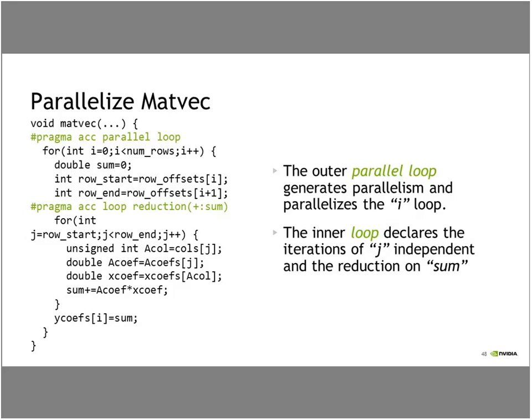The final routine to accelerate is MATVEC. This is a doubly nested loop, slightly more complicated. I'll put my ACC parallel loop on the outside loop, and on the innermost loop I'll use an ACC loop directive and expose the reduction it's doing. So the parallel loop generates parallelism and parallelizes I; the innermost loop directive tells the compiler all iterations of J are independent but need a parallel reduction. That's really all we need. When you have nested loops, if each loop in the nesting is independent, it's really useful to tell the compiler that, because otherwise the compiler must do its own analysis — and sometimes compilers get that wrong.